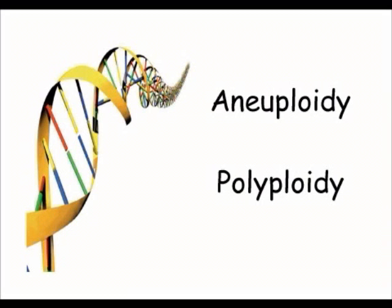Aneuploidy is when you get an extra chromosome or when you miss out a chromosome, so you only get one of a particular chromosome. Polyploidy, the second type, is basically when you get an extra set of chromosomes. This is really rare in animals and the animal survive — it's quite common in plants. There's a frog that's a polyploid, having three copies of each chromosome, but generally it's something that happens in plants. So to recap: aneuploidy is an extra chromosome; polyploidy is an extra set of chromosomes.